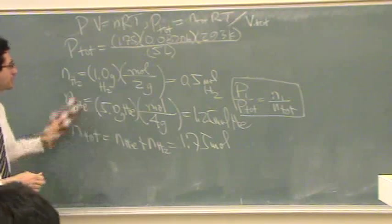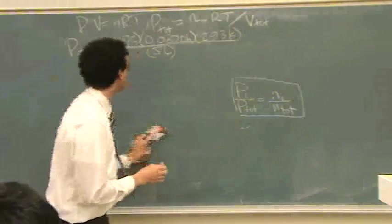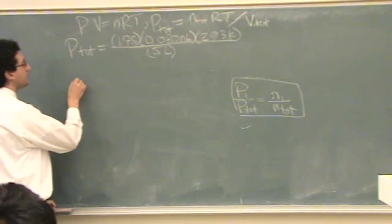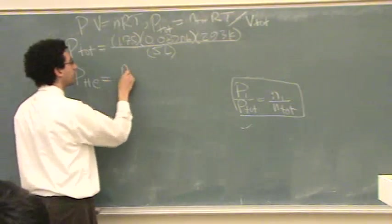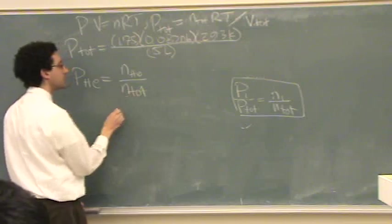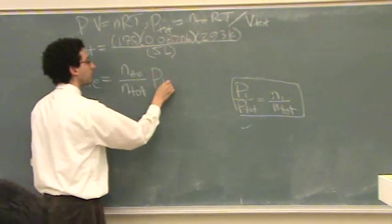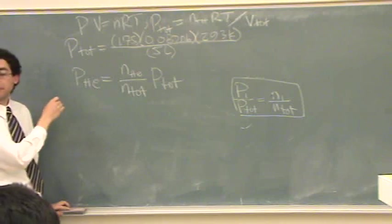So, the two formulas you're going to use are the following. So, the partial pressure of helium will equal the moles of helium divided by the total moles times P total, which you just found, P total.